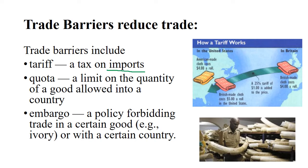In this picture, we can see that if American cloth costs $4 a roll and cloth made in Britain also costs $4 a roll, there's no incentive to buy the product made in your own country. But if a 25% tariff is imposed, that makes the $4 British cloth now cost $5 — relatively more expensive than the American product. It helps domestic businesses but discourages trade.